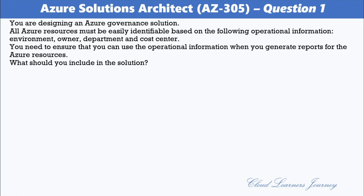Question number one: You are designing an Azure governance solution. All Azure resources must be easily identifiable based on the following operational information — environment, owner, department, and cost center. You need to ensure that you can use the operational information when you generate reports for the Azure resources. What should you include in the solution?